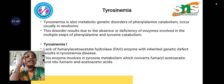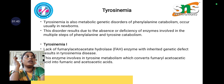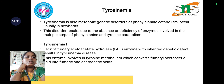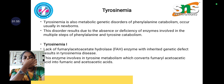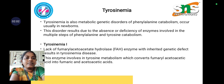Coming to tyrosinemia — it is also an amino acid metabolism disorder and a metabolic genetic disorder involving both phenylalanine catabolism, occurring mainly in neurons. This disorder results due to the absence or deficiency of enzymes involved in multiple steps of phenylalanine and tyrosine catabolism.